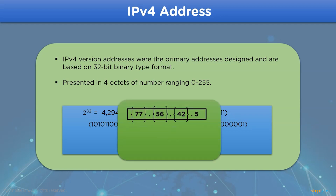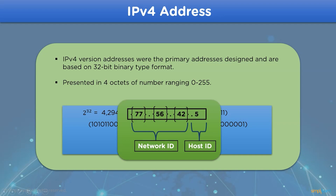This is an example of an IPv4 IP address, where the first 3 parts represent the network ID and the last part represents the host ID. Using the IPv4 address as a reference, we can identify IPv4 addresses from IPv6 addresses.